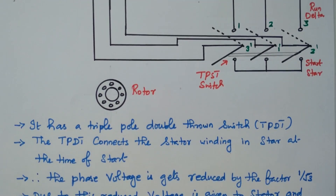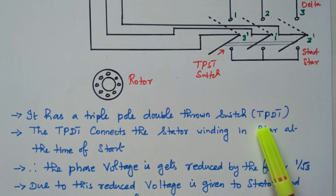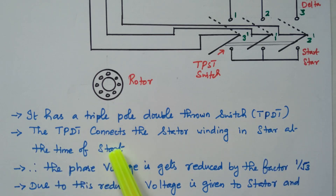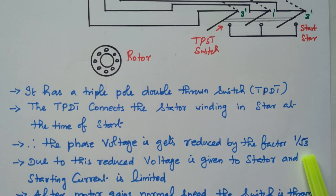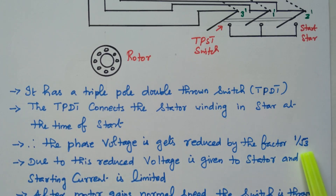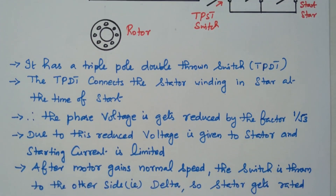Now we will see the description. It has a triple pole double thrown switch — TPDT switch. The TPDT switch connects the stator winding in star at the time of starting. Why is it connected in star connection? The phase voltages get reduced by the factor 1 by root 3. The nature of the star connection is that the voltage is 1 by root 3 times — the current will be the same, but the voltage will be 1 by root 3 times. Due to this reduced voltage given to the stator, the starting current is limited, because the voltage applied is only 1 by root 3 due to the star connection. The main aim of the starter is to limit the starting current.